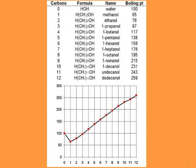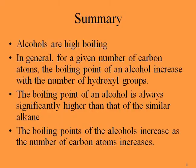This slide shows different primary alcohols with carbon chains from 1 to 12 carbon atoms. The boiling point temperature increases from 65°C up to 259°C. The first entry is water, but the rest are all primary alcohols, and the boiling point keeps going up as the carbon count increases to 259°C.